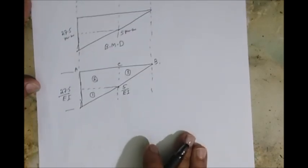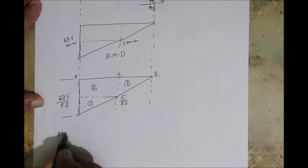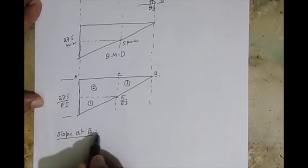Okay, now let's find the slope. Slope at B. As per the definition, what is that one? Area of M over EI diagram. Slope at B, always you need two reference points, so it is theta B minus A. So you are measuring B minus A.